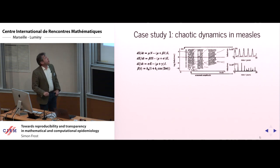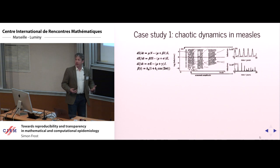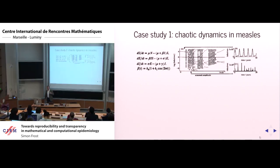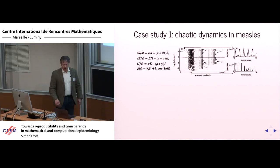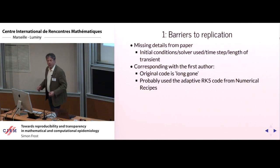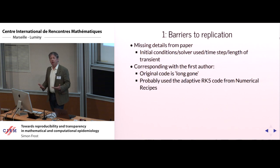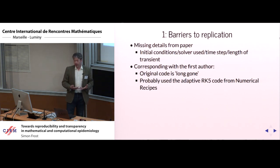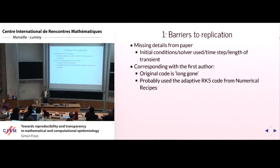Here's one study from the early 90s — a model on chaotic dynamics in measles. The idea is that you have an SEIR model with some seasonal forcing of the infectivity parameter. As you ramp up the seasonal forcing parameter, you go from biennial epidemics alternating between small and large ones, ultimately getting to what look like chaotic dynamics. This was very much in vogue in the late 80s and early 90s. I tried to reproduce it, but there were barriers: missing initial conditions, no specification of the solver, the time step, or the length of the transient.